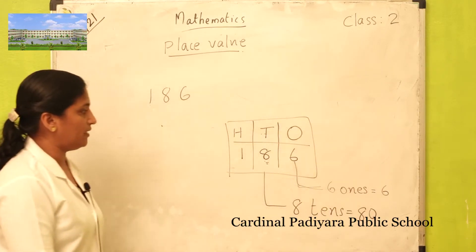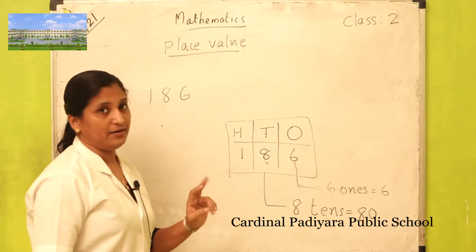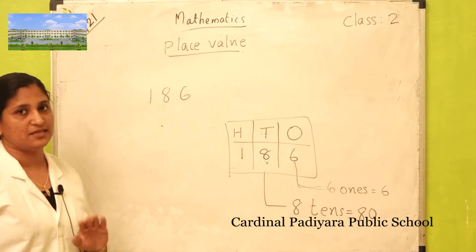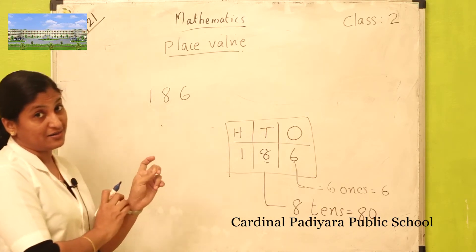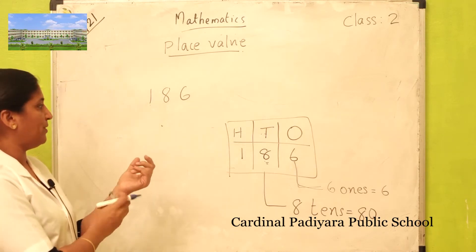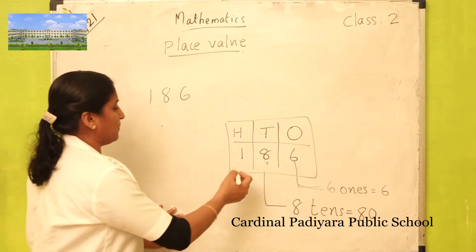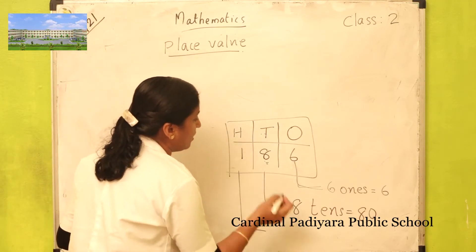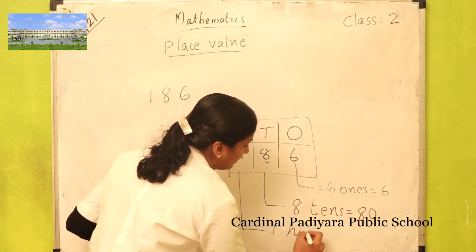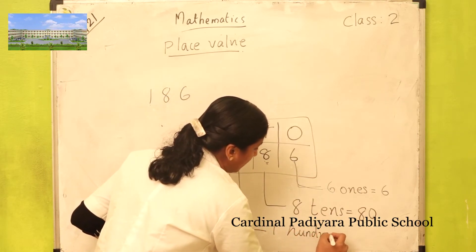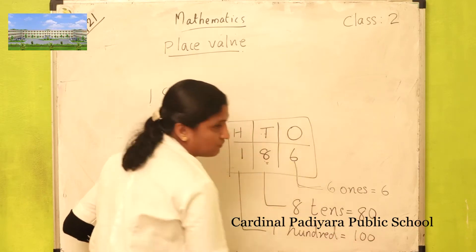What is the place value of one in one hundred eighty-six? How many hundreds? One hundred — only one hundred. So the place value of one in one hundred eighty-six is one hundred, that is one zero zero.